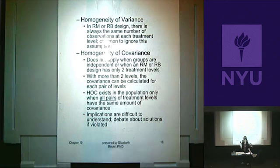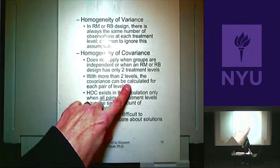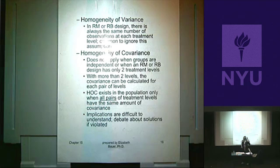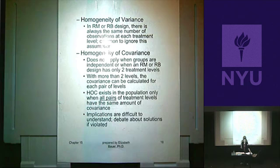Homogeneity of covariance doesn't apply when groups are independent, or if the RM or RB design has only two treatment levels. But if you have more than two levels, you could calculate the covariance — or correlation — for each pair of levels: A and B, A and C, A and D, B and C, B and D. Homogeneity of covariance exists in the population only when all pairs of treatment levels have the same amount of covariance.